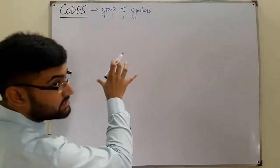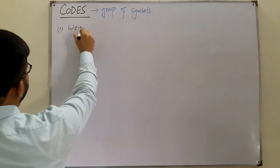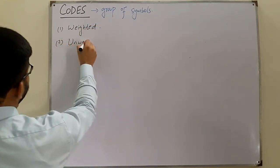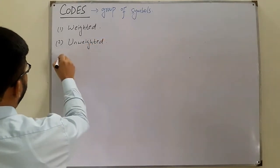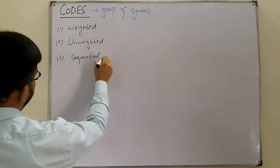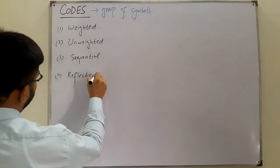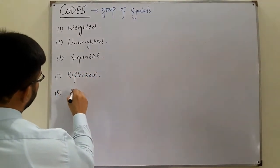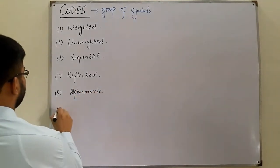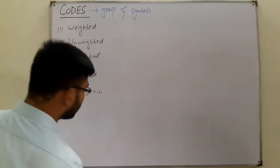Let me list the names down. We have: weighted codes, unweighted codes, sequential codes, reflected codes, alphanumeric codes, and the sixth major type is error-detecting codes.